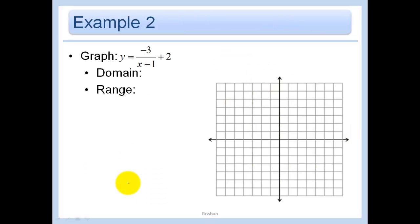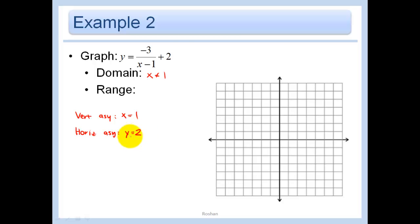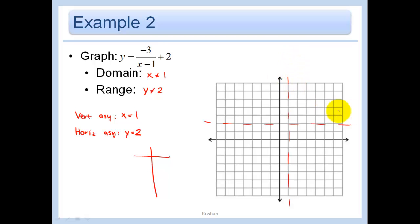Let's do an example: y equals negative 3 over (x minus 1) plus 2. This is of the form y equals a over (x minus H) plus K. The domain is all real numbers except 1, because the vertical asymptote is at x equals 1. The horizontal asymptote is at y equals 2 because we shifted two units up, so the range is all real numbers except 2. Since a is negative, the graph reflects — the branches will be down here and up here rather than the standard orientation.